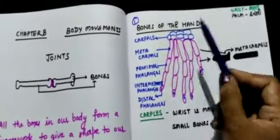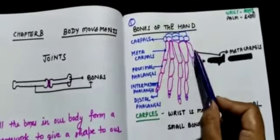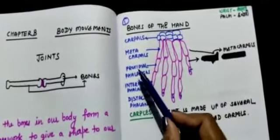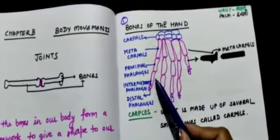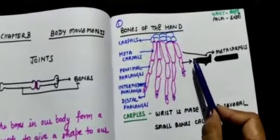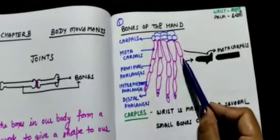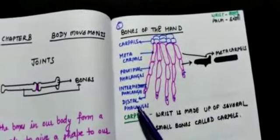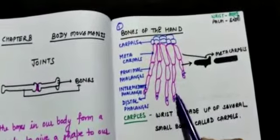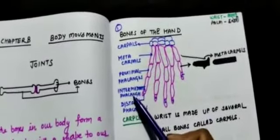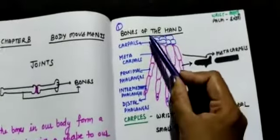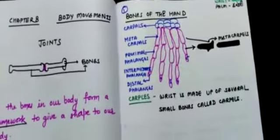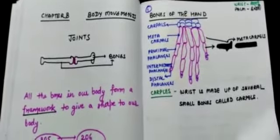Then there are five metacarpals, then five proximal phalanges, then intermediate phalanges — but the intermediate phalanges is absent in the case of the thumb. We have the thumb, first finger, middle finger, ring finger, and small finger. Then distal phalanges, which are five again. The carpals total 8 in number. So this is all about the bones of the hand.